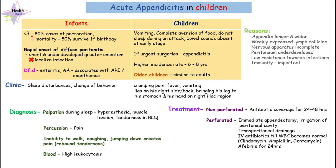Hi guys, it's me from Health Hush. In today's video we'll be speaking about acute appendicitis in children. Usually, children are at high risk for developing acute appendicitis because they have several anatomical and physiological characteristics which make them at high risk.